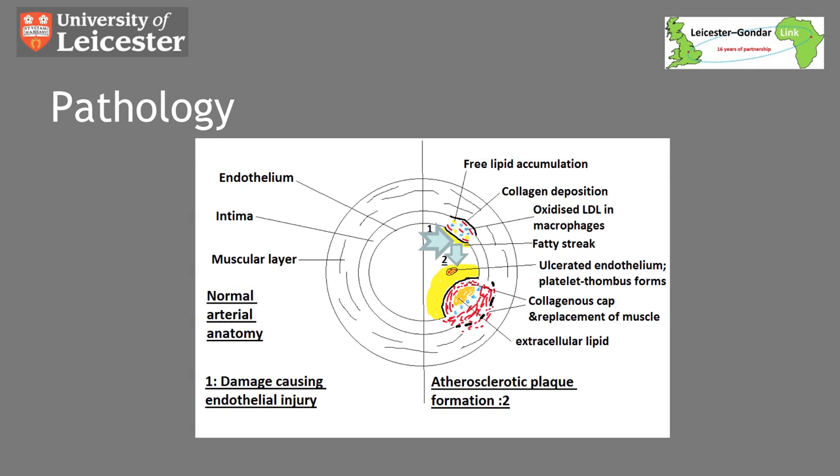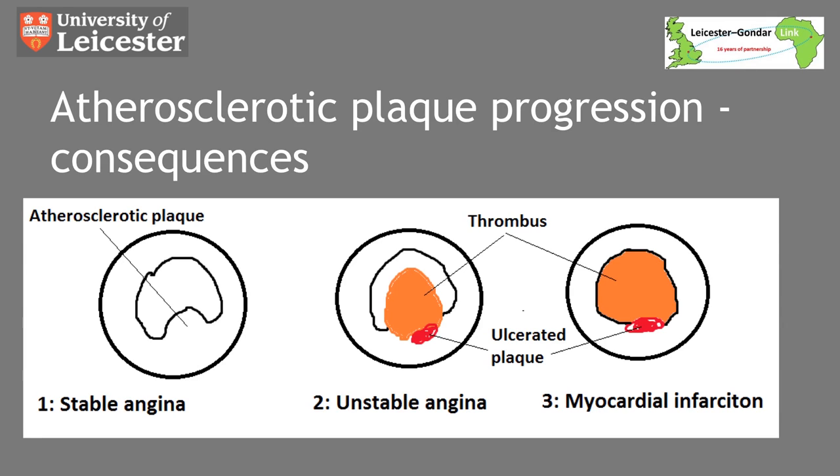Macrophages then engulf the lipoproteins and form lipid-laden foam cells, which are seen as fatty streaks. With cytokine release and further migration and proliferation of macrophages and smooth muscle cells, a growing fibrolipid plaque forms. With plaque progression, any further damage to the lumen causes platelet aggregation and thrombus formation, and as blood pools into the ruptured plaque, it becomes unstable, growing in size to reduce vessel circumference.